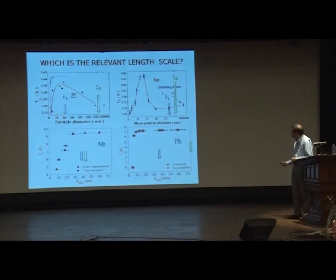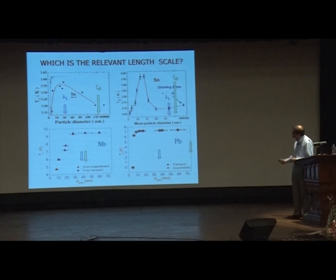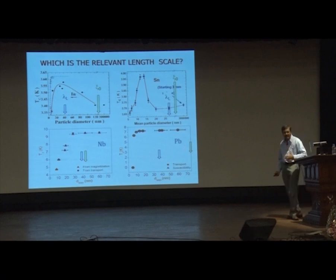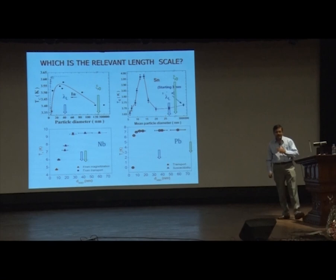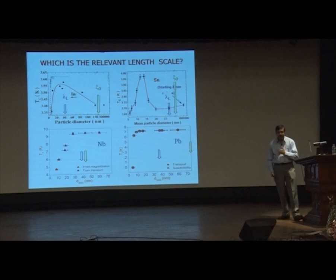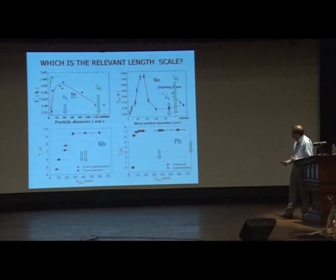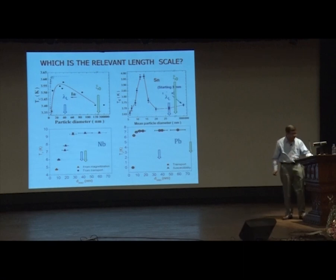Looking at data from published literature: for indium, for tin, for niobium, for lead — these materials remain superconducting till much smaller sizes than both the coherence length and the penetration depth. So these fundamental length scales like the coherence length or the penetration depth have nothing to do with particle size effects. In some cases the variation of TC is non-monotonic, but in most cases it is actually monotonic.